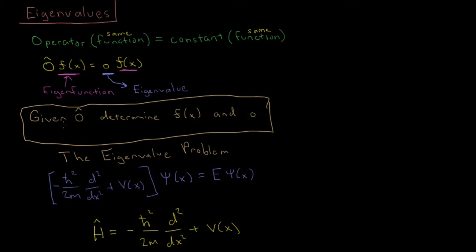And then, given this Hamiltonian operator, the problem of quantum mechanics is to determine the function, the wave function, and the eigenvalue, the total energy, for that particle.